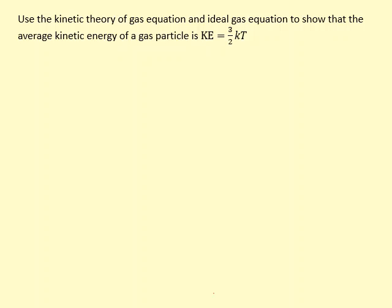Use the kinetic theory of gas equation and the ideal gas equation to show that the kinetic energy of a particle is 3 over 2 kT. So we have the kinetic theory of gas equation and then we have the ideal gas equation, and we use p equals NkT. As you can see, there's a k in the expression given above.